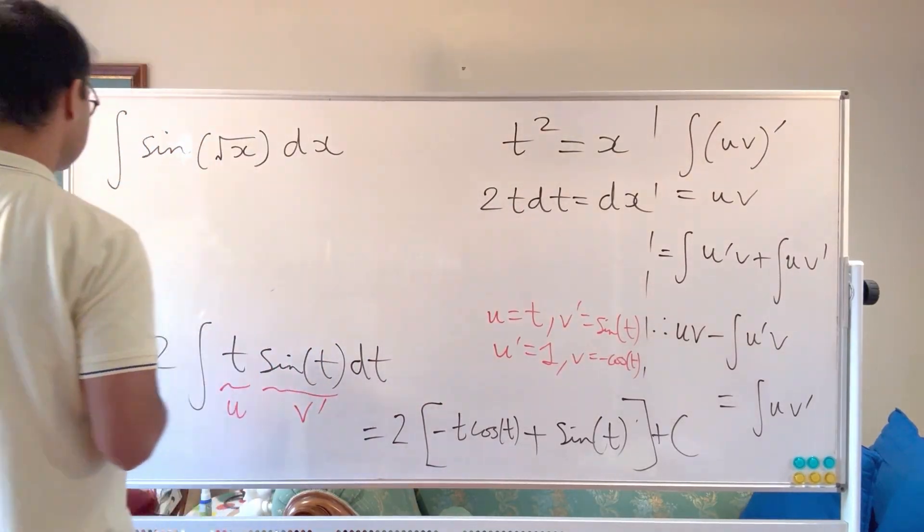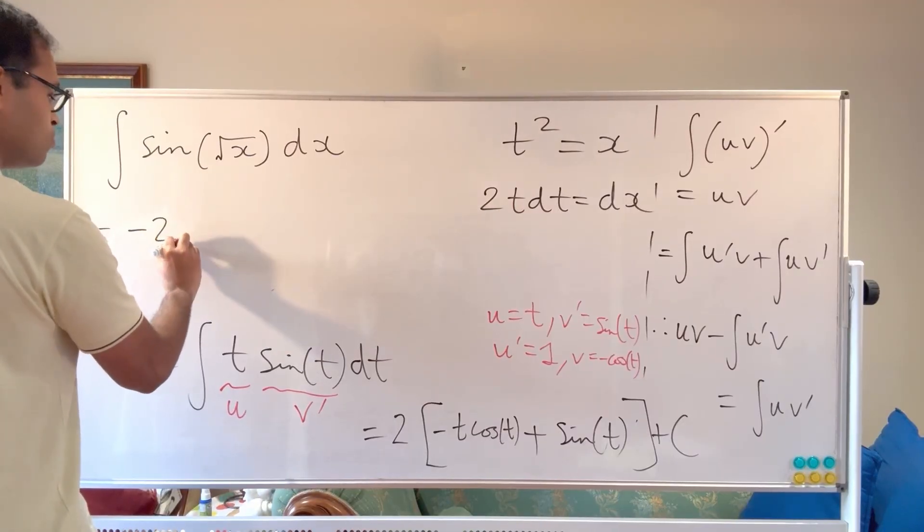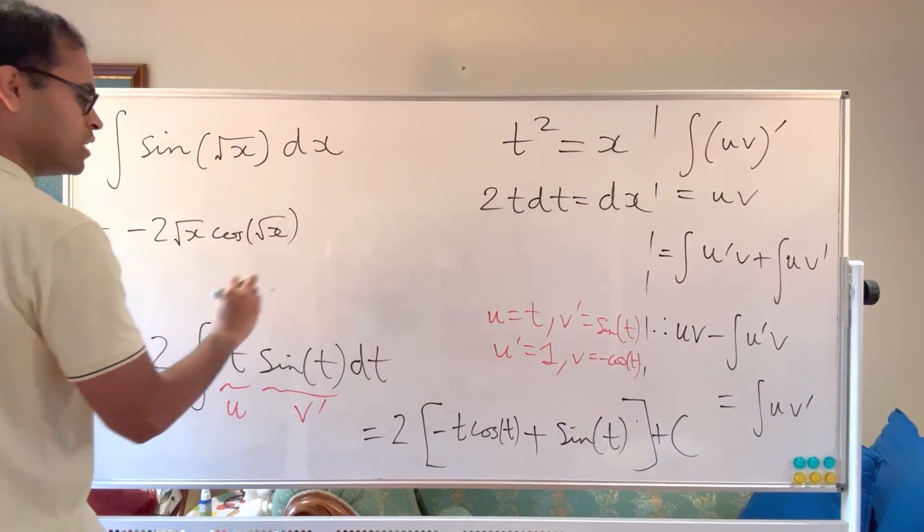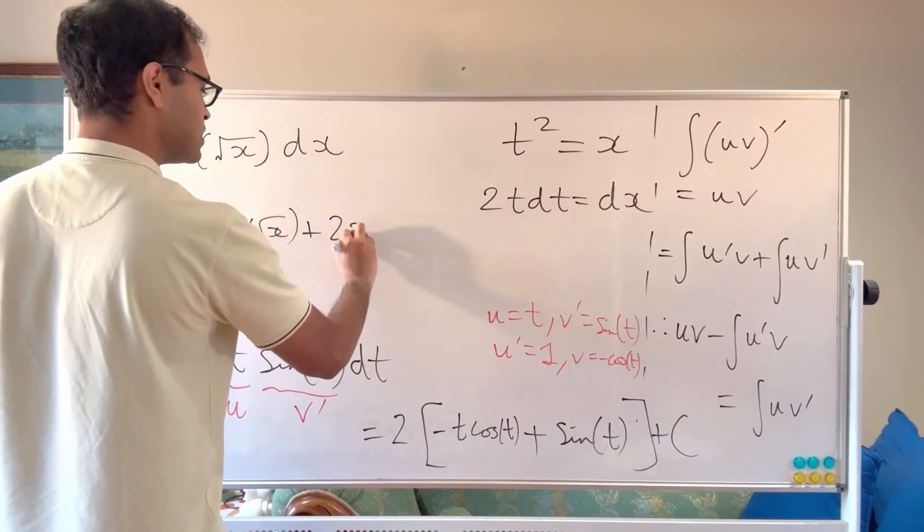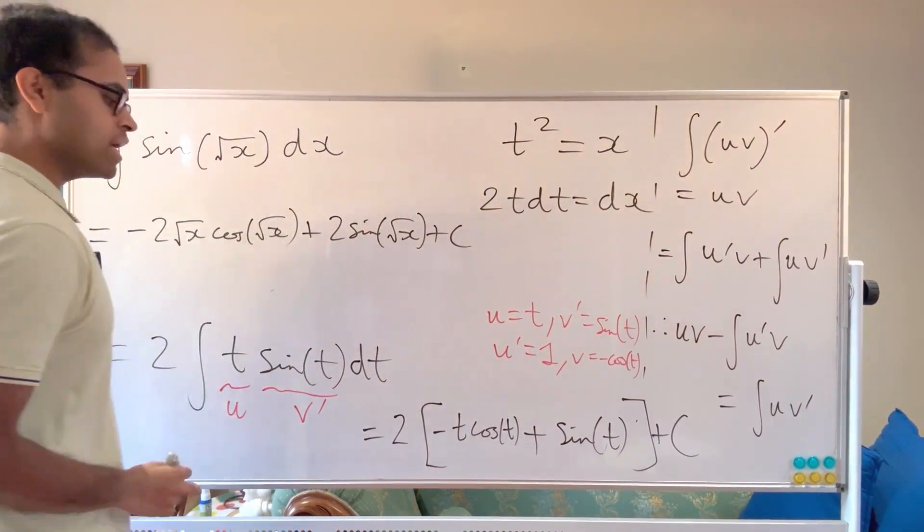All right, so let's write our final answer. It's super nice and super simple. So it's going to be negative 2 root x cosine of root x. And then it's going to be plus 2 times the sine of root x. And it's going to be plus a constant. So that's going to be our answer.